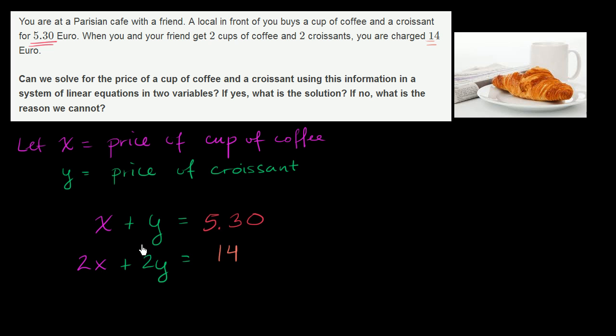So let's see if we can solve this system of equations. And there's many ways to solve this. But the most obvious way, at least looking at this right over here, is we have x, we have 2x, we have y, we have 2y. Let's take this first equation that described the local and multiply it by 2. So we're going to multiply both sides. Otherwise, the equality won't hold anymore. So we would get 2x plus 2y is equal to 2 times 5.30 is 10.60, or 10 euro 60.